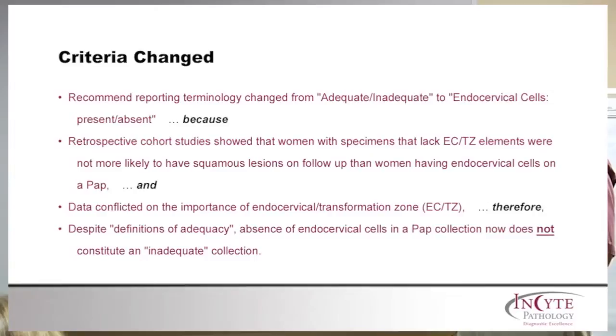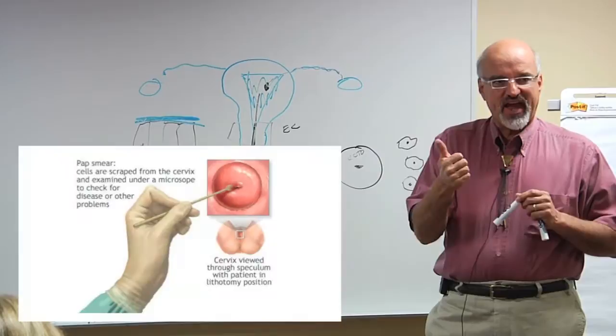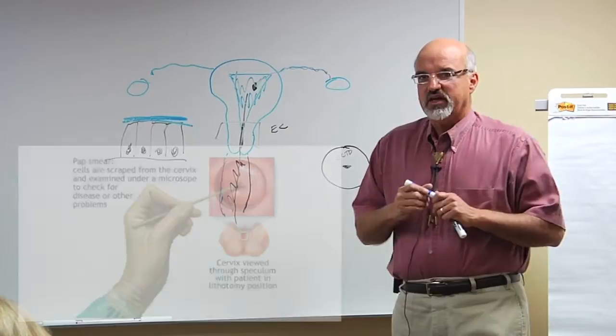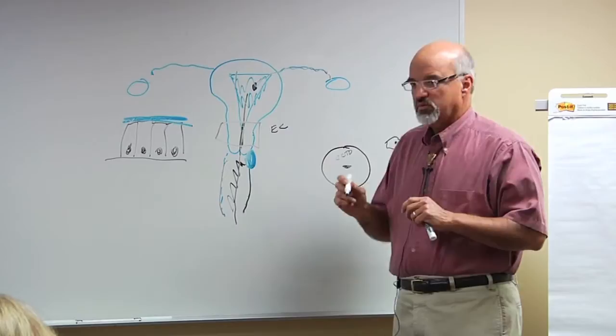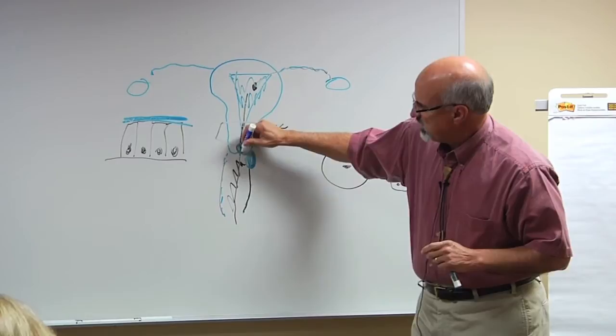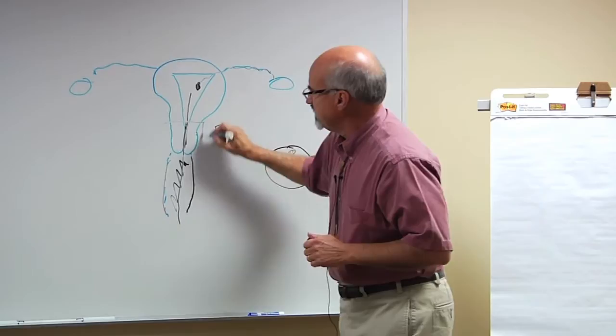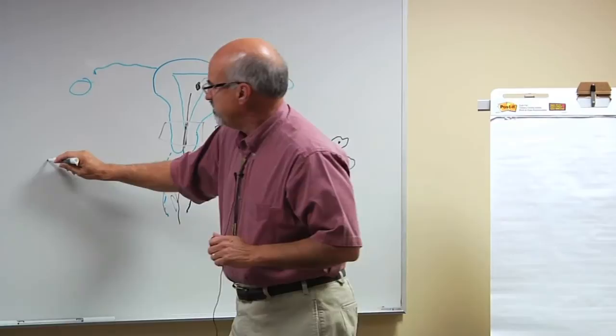Why is it important that a pap smear be collected in a very specific anatomic location and in a very specific manner? Why is sampling here not as good as sampling here in terms of screening for cervical cancer? If we were to look at this region of the uterus, the endocervical canal, in a microscope,